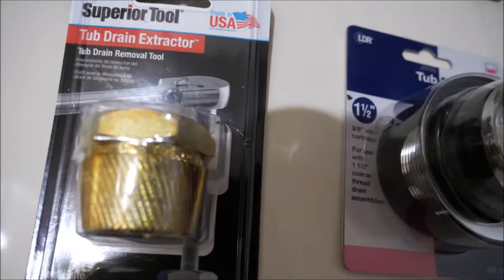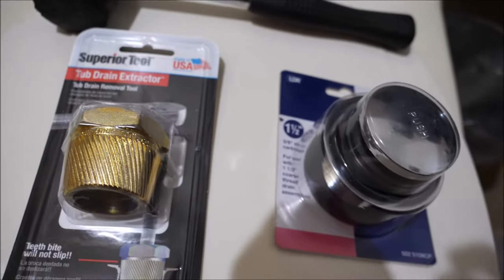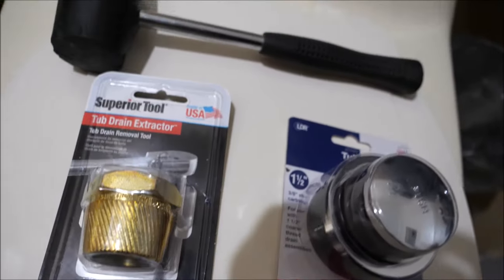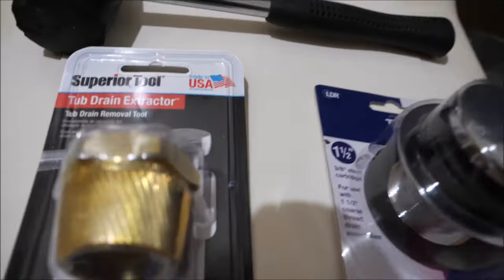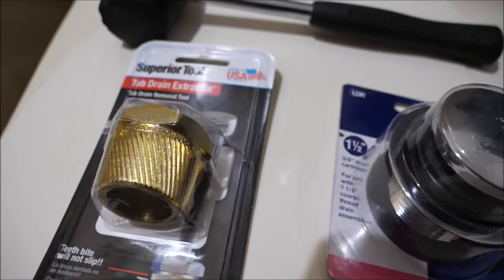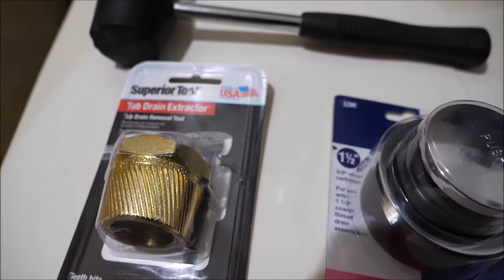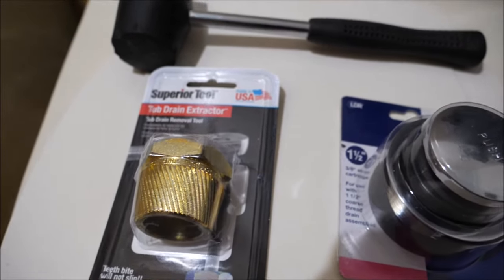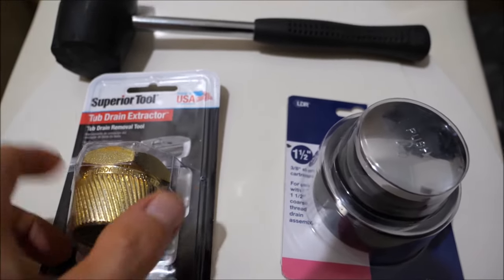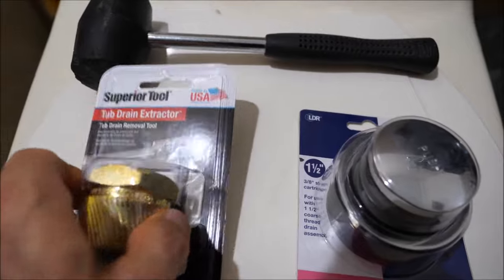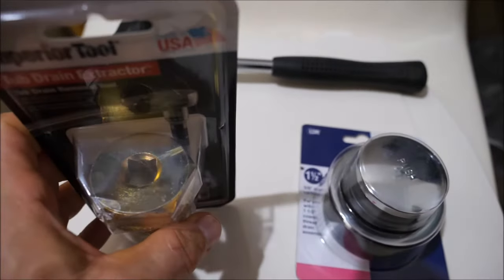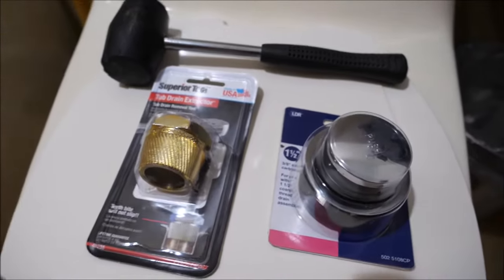Here you've got a tub drain extractor tool. There are several different tools that can be used or you can cheap out and try to use a set of pliers and try to unscrew and extract your existing drain. This one is knurled. It's supposed to bite into the existing drain and it can be operated with a quarter or a half drive ratchet.